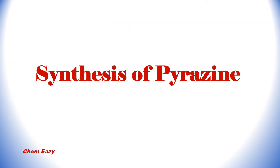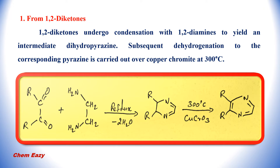First, let us see some of the important methods which can be used to synthesize pyrazine one by one. In the first method, we can prepare pyrazine from 1,2-diketones. In this method, 1,2-diketones undergo condensation with 1,2-diamines and produce an intermediate, dihydropyrazine. This dihydropyrazine on dehydrogenation over copper chromite at 300 degrees Celsius gives the corresponding pyrazine. You can see the reaction here: this is 1,2-diketones; on condensation with 1,2-diamine, we get the intermediate dihydropyrazine.